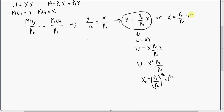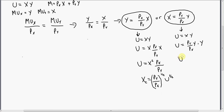Going back to the top, we're going to do the same thing. We're going to plug this result back into our utility function. So where we see an X, we're going to plug in the price of good Y divided by the price of good X times good Y, and then that's all times good Y again. So utility equals the following. Solving for Y and taking the square root of both sides, we will be left with our compensated demand function for good Y.